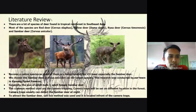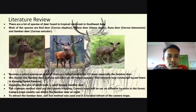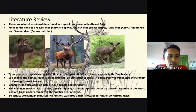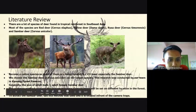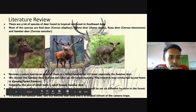My name is Mohammad and I will present the literature review. There are many species of deer found in tropical rainforests in Southeast Asia. Most of the species are red deer Cervus elaphus, fallow deer Dama dama, rusa deer Cervus timorensis, and sambar deer Cervus unicolor. We have chosen the sambar deer Cervus unicolor as our target species, as most of them are being hunted for their meat.